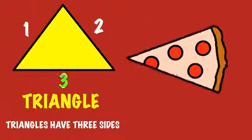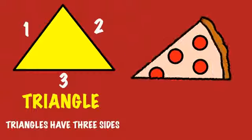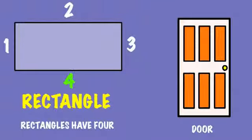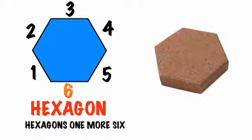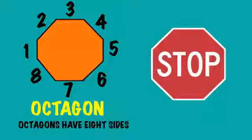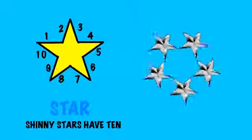Triangles have 3 sides. Rectangles have 4. Pentagons have 5 sides. Hexagons have 6. Octagons have 8 sides. Shiny stars have 10.